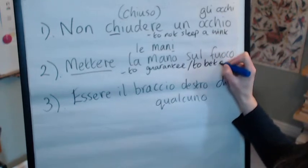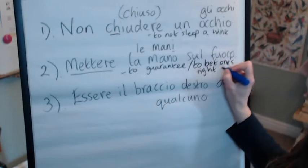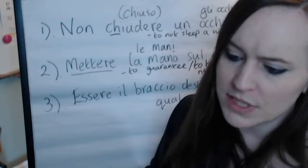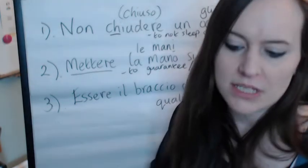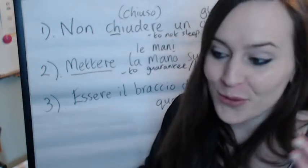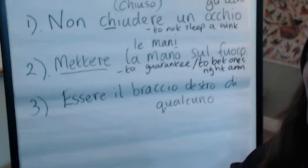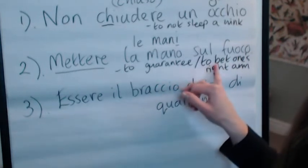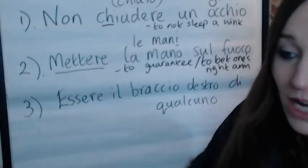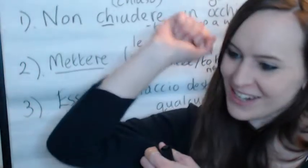To bet one's right arm was quite nice because it had the corporal, the body link. Now — essere il braccio destro. The right arm — il braccio destro.